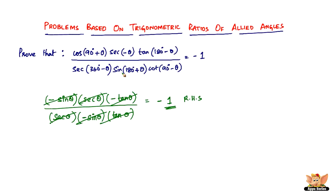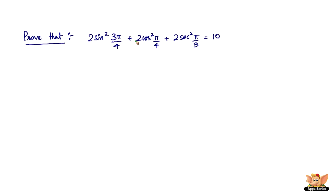Let's quickly solve another problem before we conclude. Prove that 2sin²(3π/4) + 2cos²(π/4) + 2sec²(π/3) = 10. Since π = 180°, we convert each term to degrees.